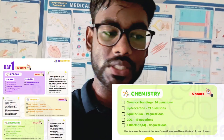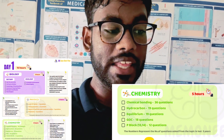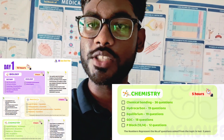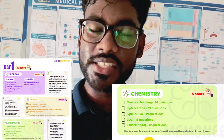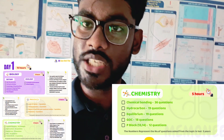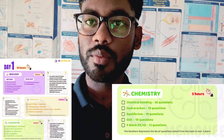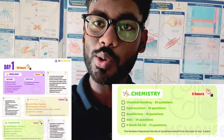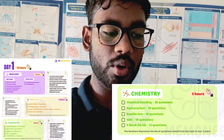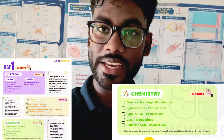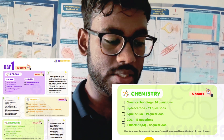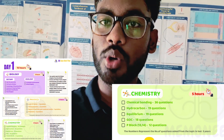For chemistry, we have: Chemical Bonding, Hydrocarbon, Equilibrium, General Organic Chemistry, and P-Block — these are the high-weightage chapters. In the last 5 years, Chemical Bonding had 36 questions, Hydrocarbon had 19 questions, Equilibrium and P-Block (both class 11 and 12) had around 10-11 questions each.